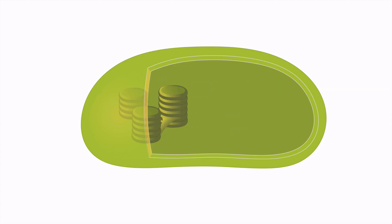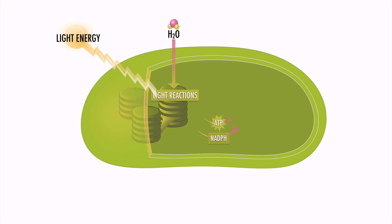Photosynthesis occurs in two steps inside of the chloroplast. The first step is the light reaction, which occurs in the thylakoid discs. Here, energy from light is captured, and water is split to create ATP and NADPH, which are energy molecules that will be used in the next reaction. The light reaction also creates oxygen as a byproduct.